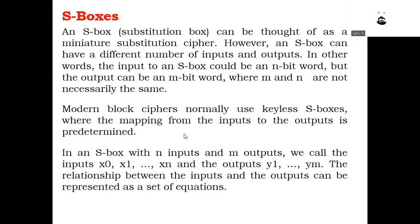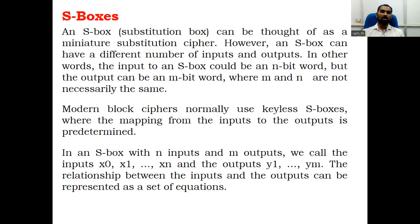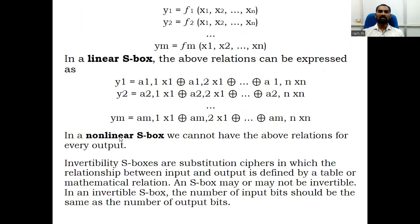In P-boxes it is predetermined, and similarly in S-boxes it is predetermined. In S-boxes with n inputs and m outputs, we call the inputs x0, x1, ..., xn and the outputs y1, ..., ym. The relationship between inputs and outputs can be represented as a set of equations, and we can have two types: linear S-boxes and nonlinear S-boxes.